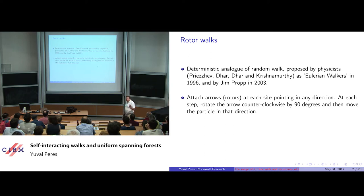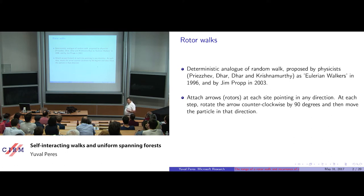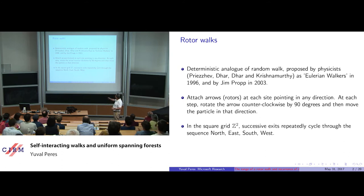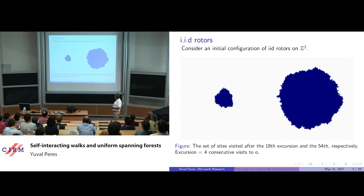Every site in the lattice has an arrow. We start each arrow in a random direction, and every step, when a particle is at a site, it first rotates the arrow by 90 degrees counterclockwise and then moves in that direction. Successive exits from a site cycle through the North-East-South-West sequence.